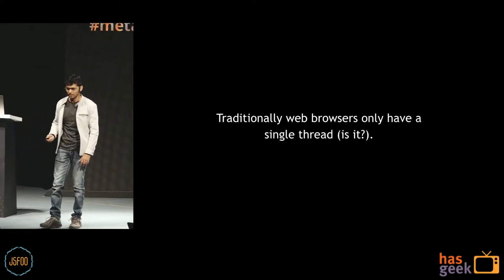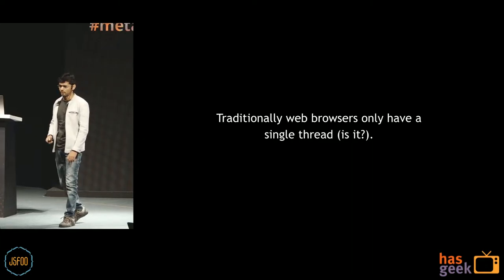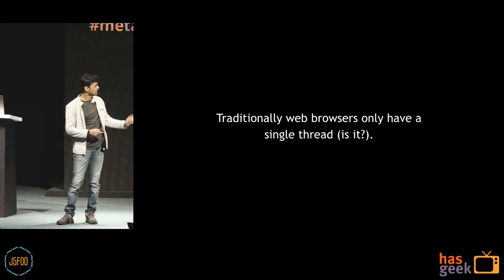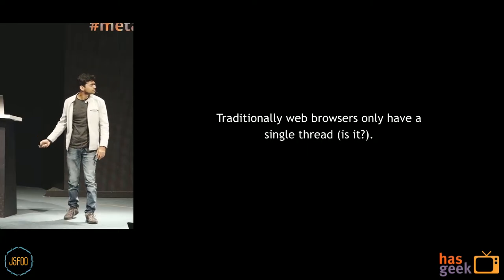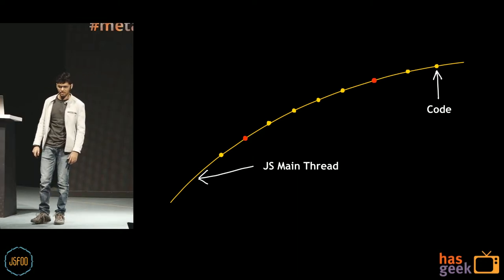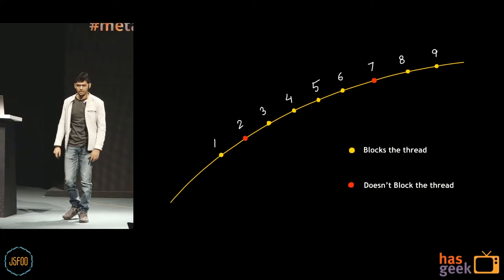Traditionally web browsers only have a single thread, so we say that JavaScript is single-threaded. Saying JavaScript is single-threaded is correct; saying the browser is single-threaded is not correct. The browser assigns a single thread to each tab to run your JavaScript on. Imagine this line is the main thread and the small dots are the code you actually write — the yellow ones are blocking code and the red ones are non-blocking code.